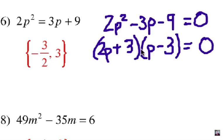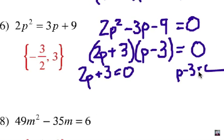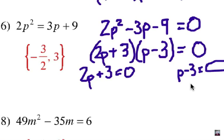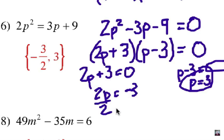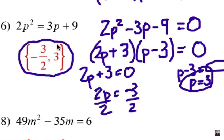Just kind of doing my middle terms here, that's going to give me positive 3p, and these will give me negative 6p, and that will give me my correct middle term. So 2p plus 3 equals 0, and p minus 3 equals 0. So p equals 3. And I'm going to subtract 3 on each side, divide by 2 on each side, and that's why I get negative 3 halves. So negative 3 halves and 3.